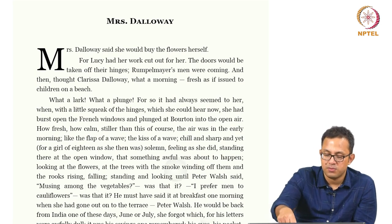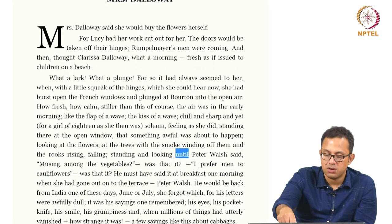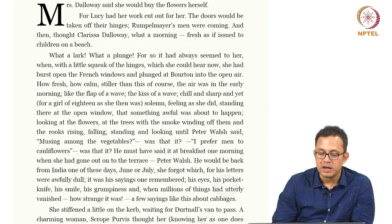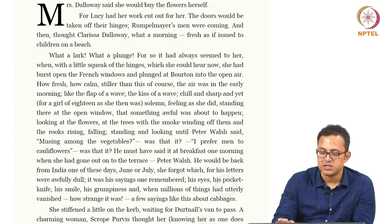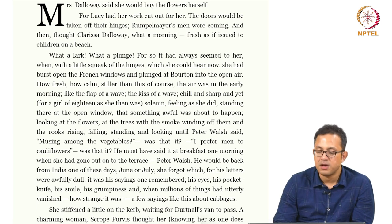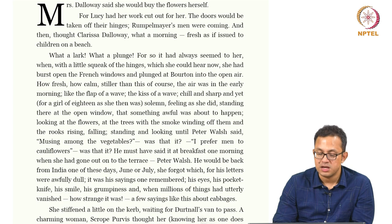'He must have said that at breakfast one morning, when she had gone out to the terrace — Peter Walsh. He would be back from India, one of these days, June or July, she forgot which, for his letters were awfully dull. It was his sayings one remembered, his eyes, his pocket knife, his smile, his grumpiness, and when millions of things had utterly vanished, how strange it was — a few sayings like this about cabbages.'